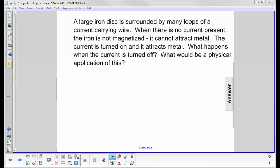A large iron disc is surrounded by many loops of a current carrying wire. When there is no current present, the iron is not magnetized. It cannot attract metal.